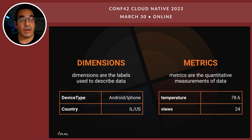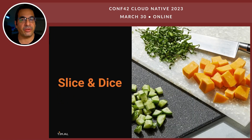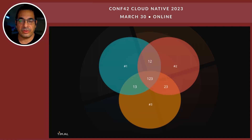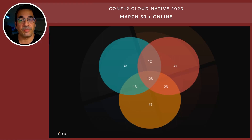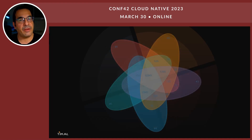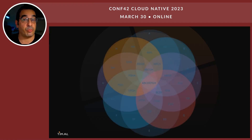On the other hand, metrics would be, for instance, temperature, which has a value, or views, which also is a value. All we want to do with dimensions and metrics is slice and dice. Slice and dice might be easy with three dimensions — that's seven permutations. With five dimensions, that's 31 permutations. And seven dimensions has 127 permutations. Of course, we'd like to have many, many more dimensions.